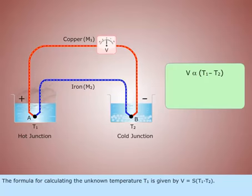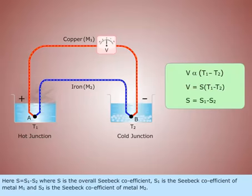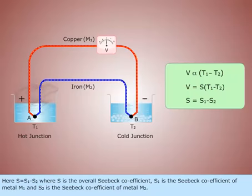The formula for calculating the unknown temperature T1 is given by V equal to S into T1 minus T2. Here, S equal to S1 minus S2, where S is the overall Seebeck coefficient, S1 is the Seebeck coefficient of metal 1, and S2 is the Seebeck coefficient of metal 2.